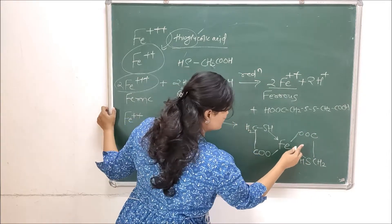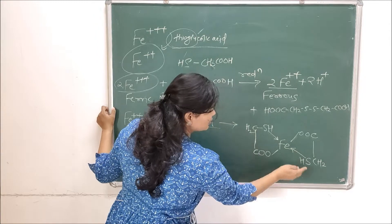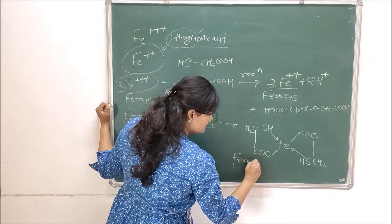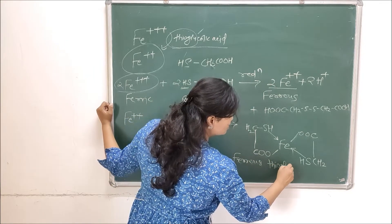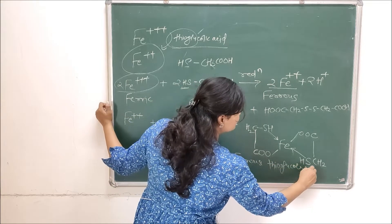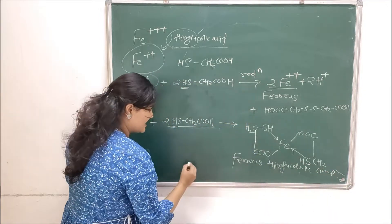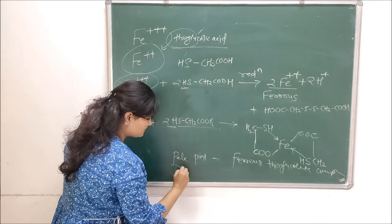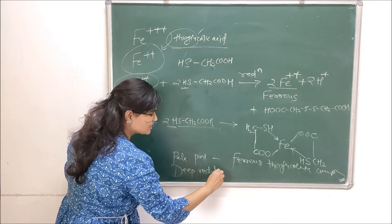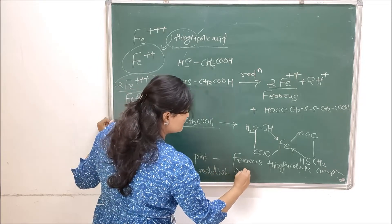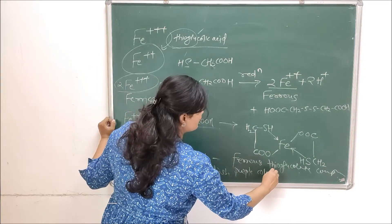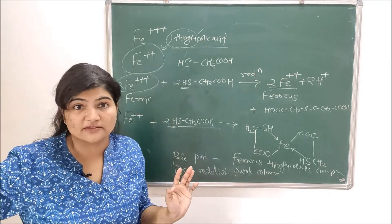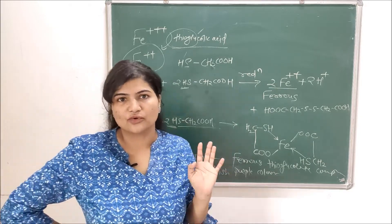So this will be a bond and this will be a coordinate one. So this is how the complex forms and it is called ferrous thioglycolate complex and it has pale pink to deep reddish purple color.